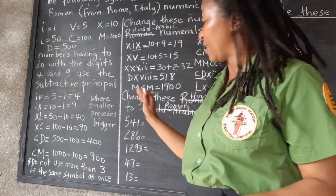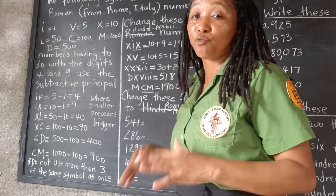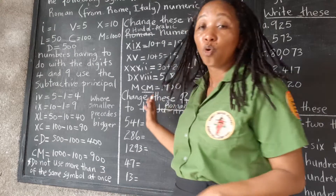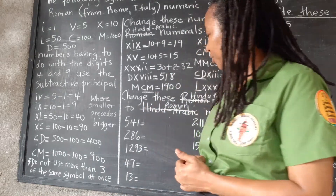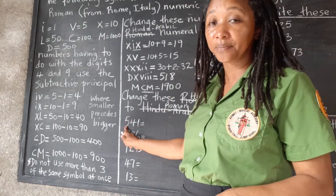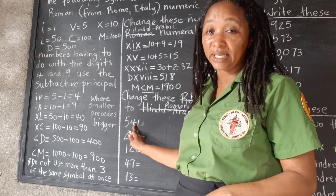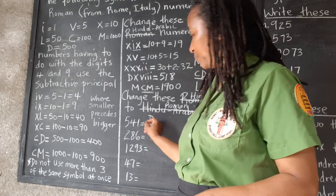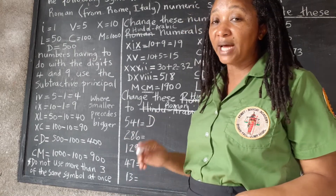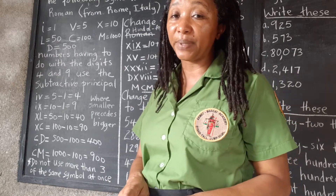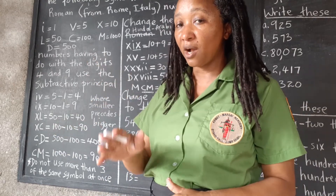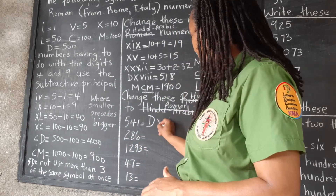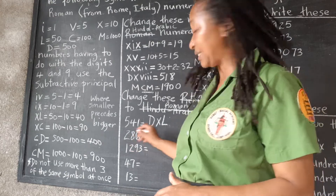Now we're changing Hindu-Arabic numbers — the regular numbers that we use — to Roman numerals. For 541: we need 500, which is D; we need 40, which uses the subtractive principle — 50 take away 10 — so the 10 is written first and then the 50; and then 1 is I.